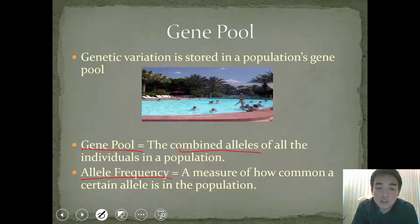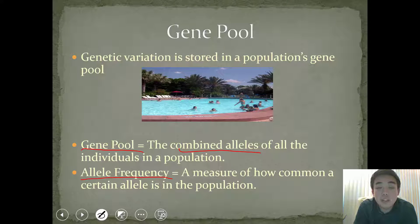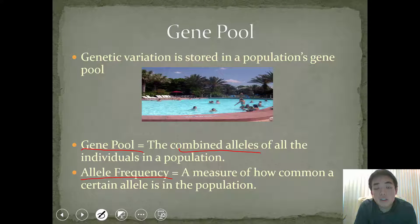Certain alleles are going to have a higher allele frequency, meaning there's going to be more individuals with those alleles, and some are going to have a lower or smaller allele frequency, meaning there's going to be fewer individuals in the population with that gene or allele.